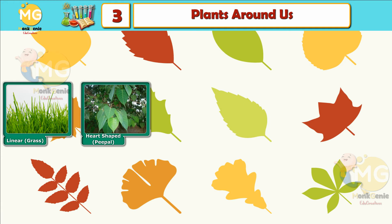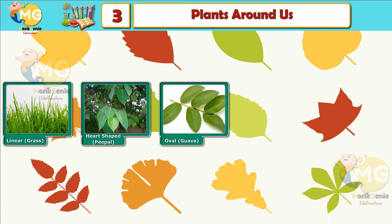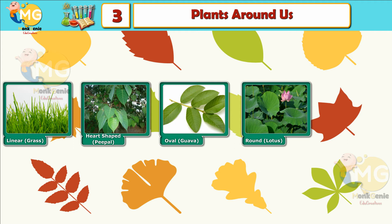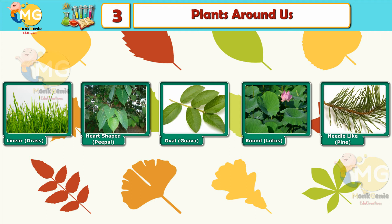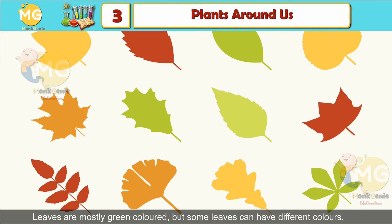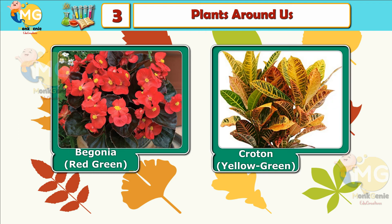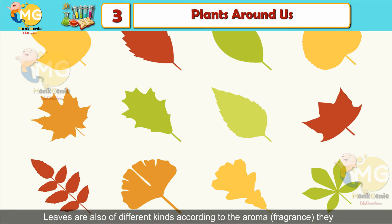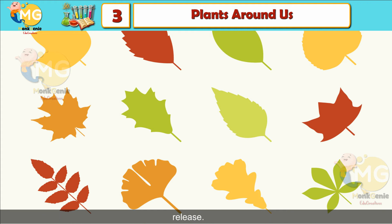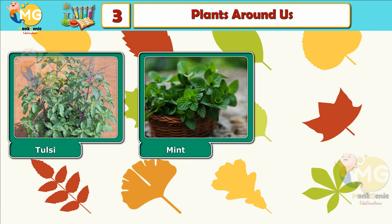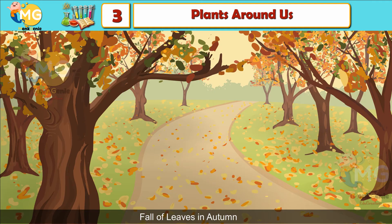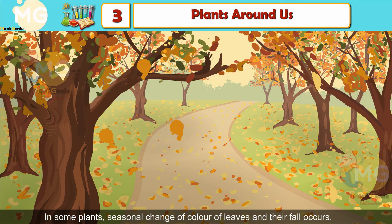Leaves can also be round like lotus, or needle-like. Leaves are mostly green colored, but some leaves can have different colors too — like begonia which is red-green, and croton which is yellow-green. Leaves are also of different kinds according to the aroma or fragrance they release, for example tulsi, mint, and curry leaves.